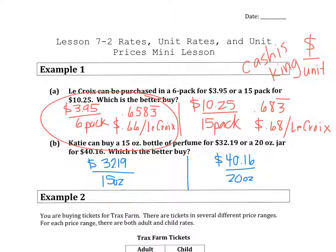We're going to do $32.19, all you have to do is divide the top by the bottom, divided by the 15 ounces, and I got 2.146, which I'm going to clean up here in a minute. I'm going to look at the next one, and then I'm going to clean them both up. $40.16 divided by the 20 ounces, and that's going to be 2.008. So let me clean those up.